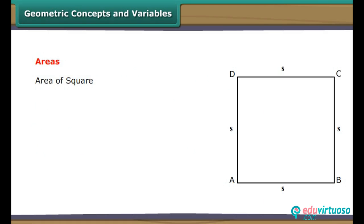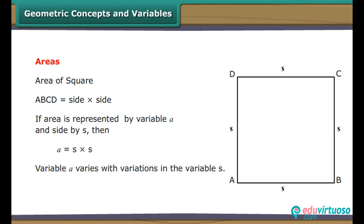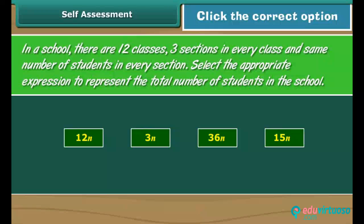Area of square ABCD equals S into S. If area is represented by variable A and side by S, then A equals S into S. Variable A varies with variations in variable S.